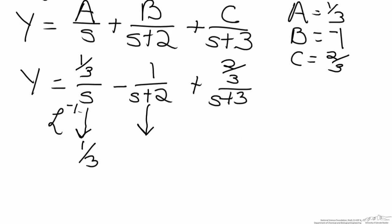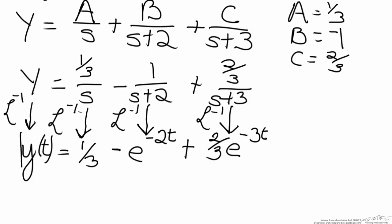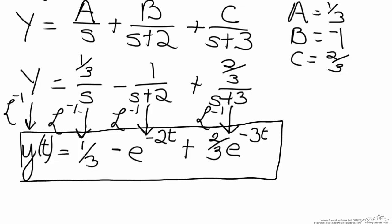For 1/(s plus 2), this follows the Laplace transform form 1/(s plus a), whose inverse Laplace transform is an exponential e to the negative 2t. The same form applies to the third term, except it gives e to the negative 3t, with the 2/3 constant factored out, yielding 2/3 times e to the negative 3t. Putting the signs back in, and applying the inverse Laplace transform to the left side — where the inverse Laplace of Y is y(t) — we get the final solution: y(t) equals 1/3 minus e to the negative 2t plus 2/3 times e to the negative 3t, which is the solution to our differential equation.